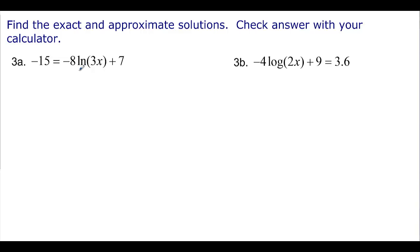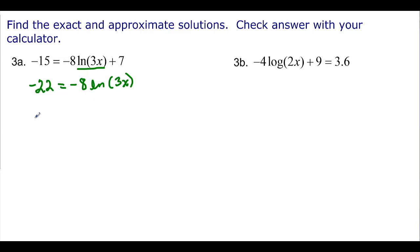For the next problem, we need to isolate ln 3x. We subtract 7, giving negative 22 equals negative 8 ln 3x, then divide by negative 8. Simplifying by dividing both numerator and denominator by 2 gives 11 over 4 equals ln 3x.